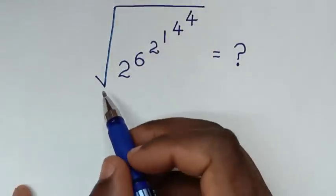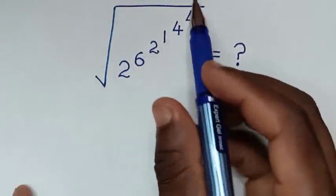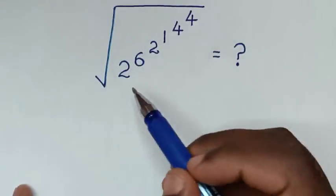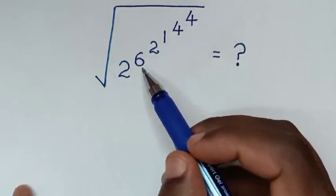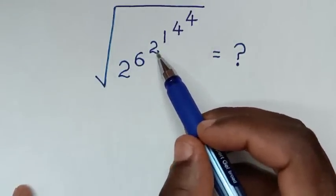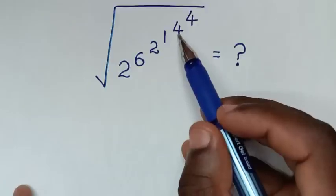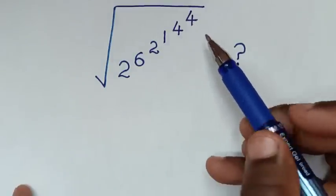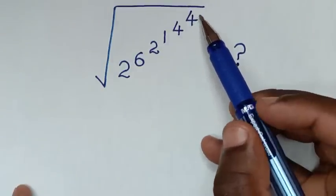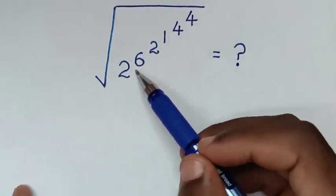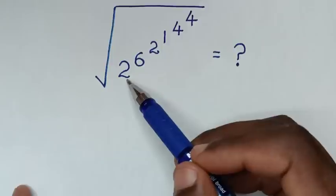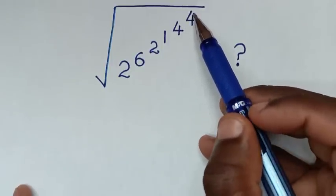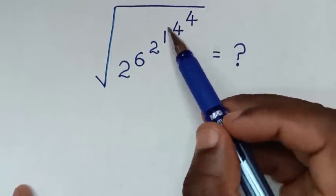Hello, you are welcome to solve this math problem, which is the square root of 2 power of 6 power of 2 power of 1 power of 4 power of 4. We'll solve from the top powers going downward, starting with 4 power of 4.